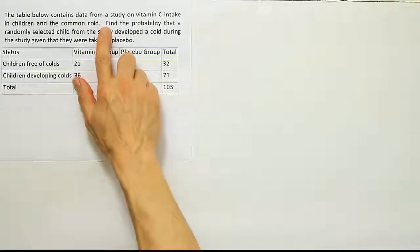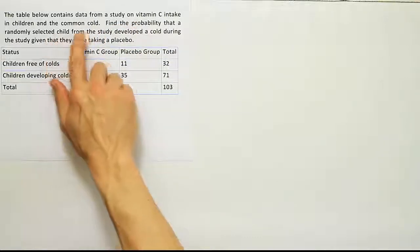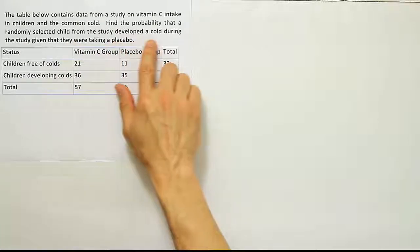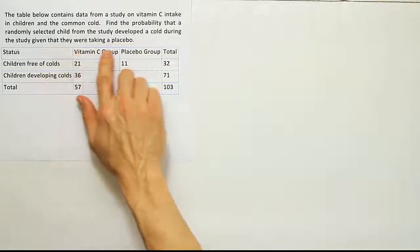The table below contains data from a study on vitamin C intake in children and the common cold. Find the probability that a randomly selected child from the study developed a cold during the study given that they were taking a placebo.